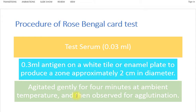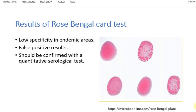The slide is then agitated on a slide rocker gently for 4 minutes at room temperature and observed for agglutination. As shown on the slide, sample numbers 2, 3, and 5 are showing positive agglutination, so they are positive for brucellosis.